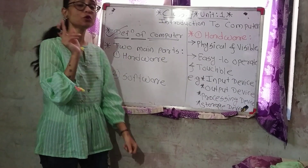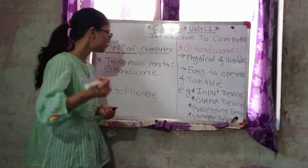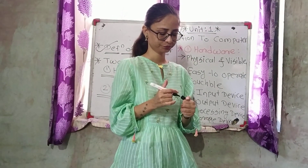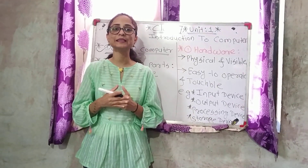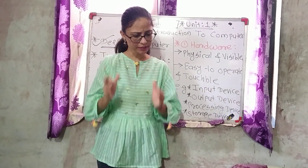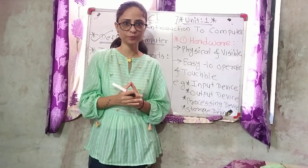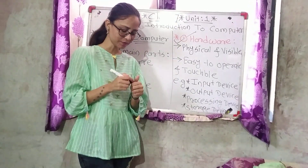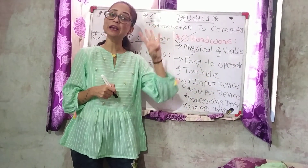Now, a new main topic. There are two main parts of a computer. The very first part is known as hardware and the second part is software. Hardware is a physical and visible device — users can easily see them and touch them. The devices which are physically available and visible to the user, and the user can easily touch and operate them, are known as hardware devices. The best examples of hardware devices are input devices, output devices, processing devices, and storage devices.